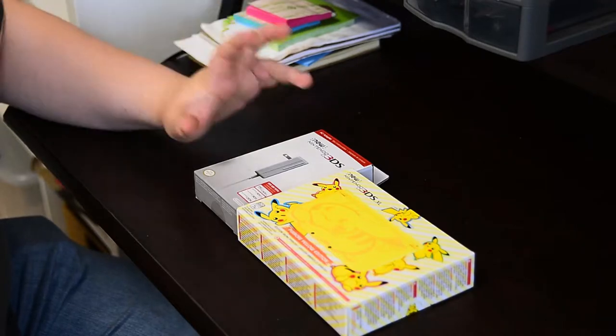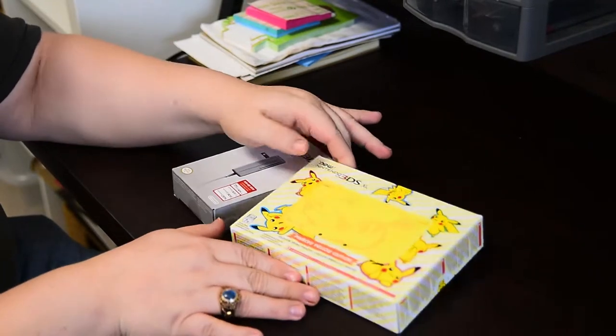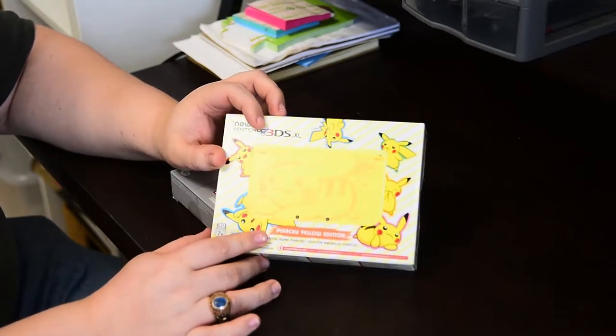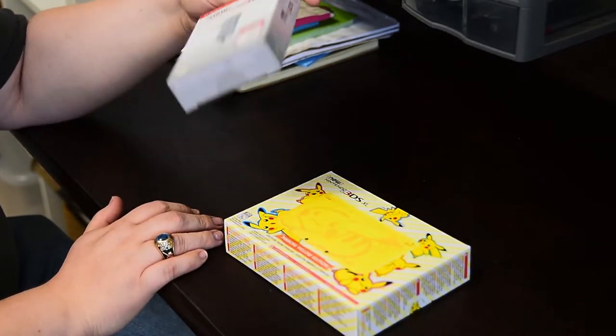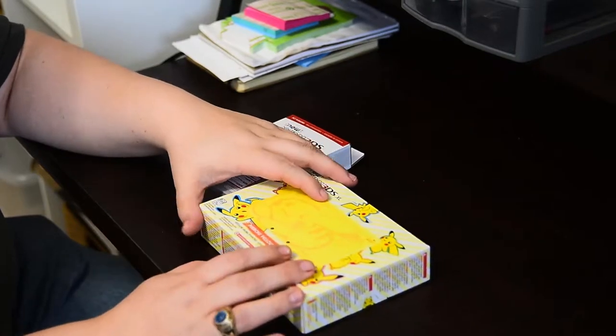What's up y'all? Fiona Fox from Kitsuga.com here. We got the new Nintendo 3DS XL Pikachu Yellow limited edition and the charger because Nintendo don't give you that anymore in the box.